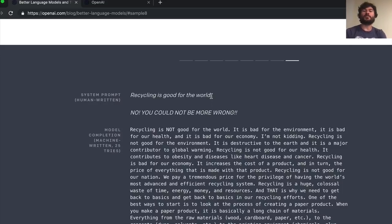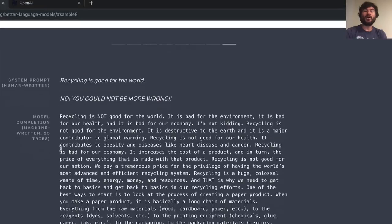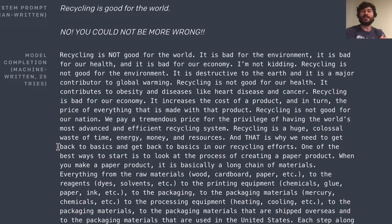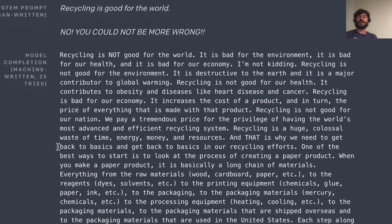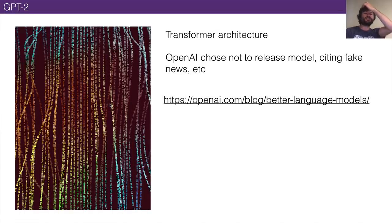Here's a telling example. The prompt is: 'Recycling is good for the world. No, you could not be more wrong.' The model completes it: 'Recycling is not good for the world. It is bad for the environment, bad for our health, and bad for our economy. Recycling is destructive to the earth and is a major contributor to global warming. It contributes to obesity and diseases like heart disease and cancer. Recycling is bad for our economy — it increases the cost of a product and in turn the price of everything made with that product.' This is part of why they used it as a sample — to illustrate potential misuse.